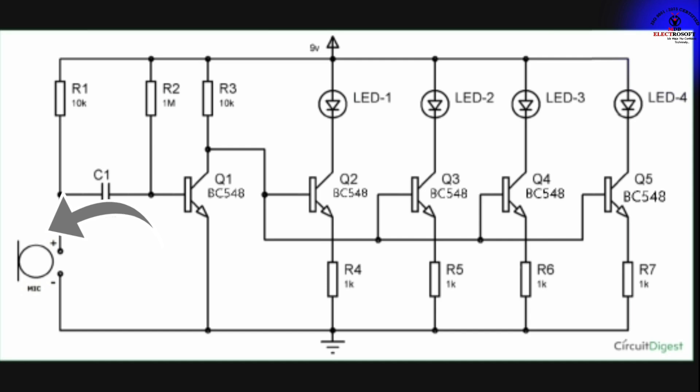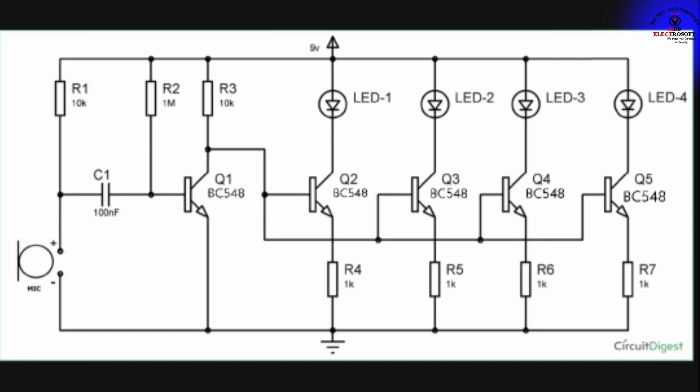These voltage levels are further processed. R2 and C14 eliminate the unwanted noise. Now these voltage levels are applied to the NPN transistor, which is the component that amplifies the signal and the voltage levels.